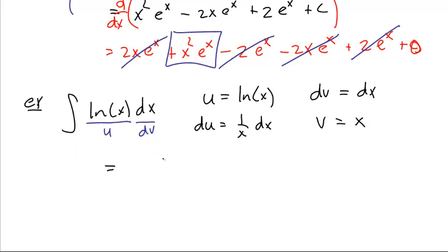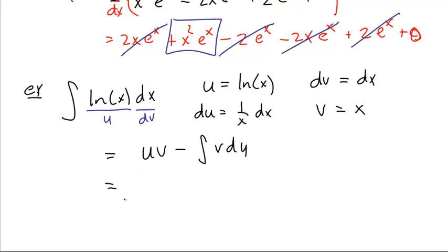Integral of u dv is uv minus integral of v du. I said I wasn't going to write it again. I did. x ln of x. I know I put them in the wrong order, but I always like putting my logarithms last. Minus the integral of v du,